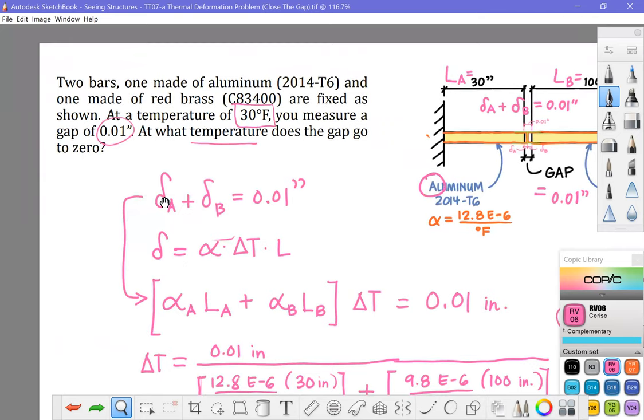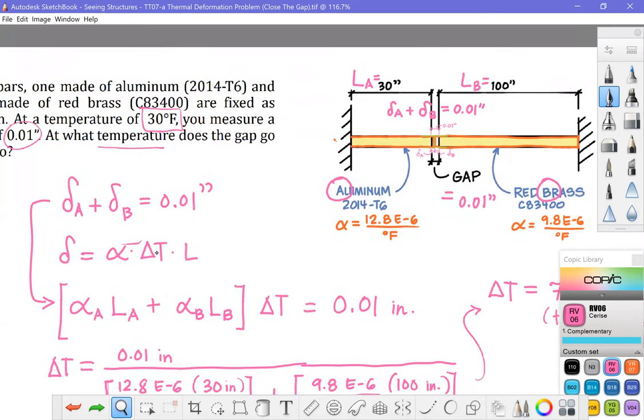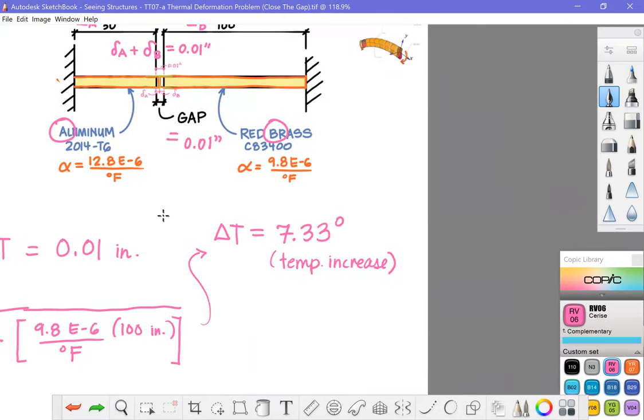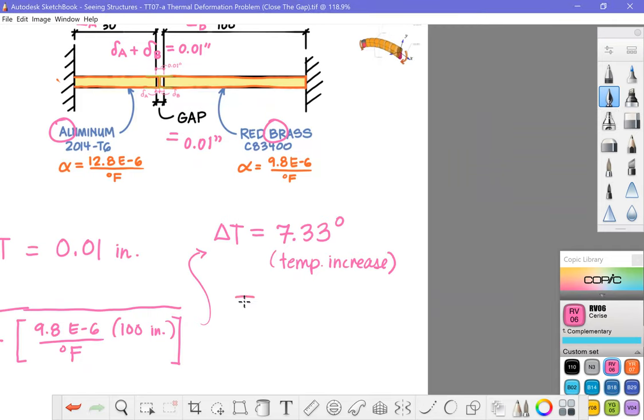Of course the problem doesn't ask us that. The problem says at what temperature does the gap go to zero. So all we need to do is take our original temperature of 30 degrees Fahrenheit. My final temperature is equal to my initial temperature plus the change in temperature, so I'll do 30 degrees Fahrenheit plus 7.33 degrees Fahrenheit and in terms of a final answer to three sig figs we would estimate that happening at 37.3 degrees Fahrenheit.